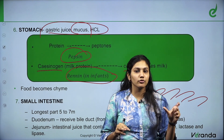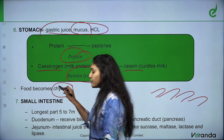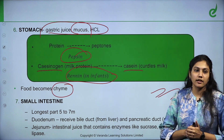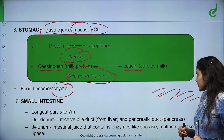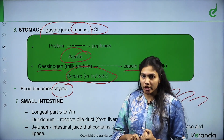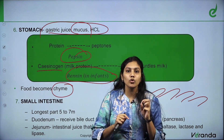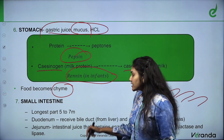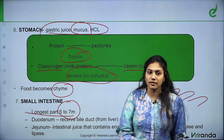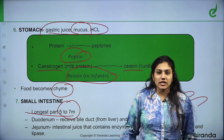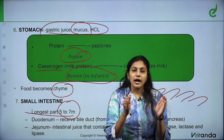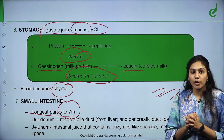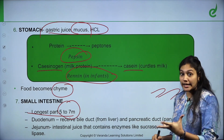After all this, the bolus food becomes chyme. Then it goes to the small intestine after the stomach. The small intestine has three important parts: duodenum, jejunum, and ileum. The name is small, but it is actually the longest part — five to seven meters in length, compressed inside the body.